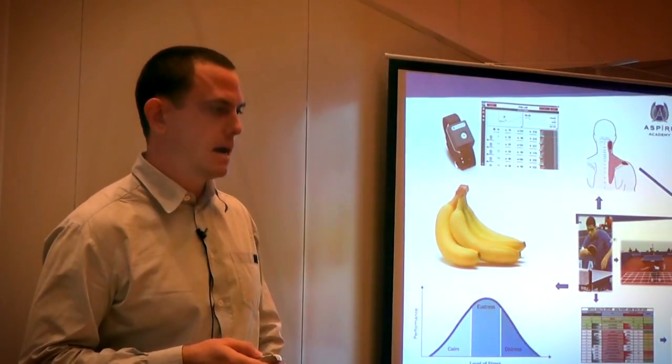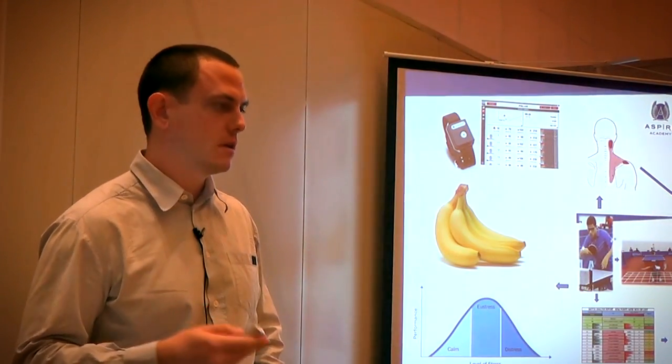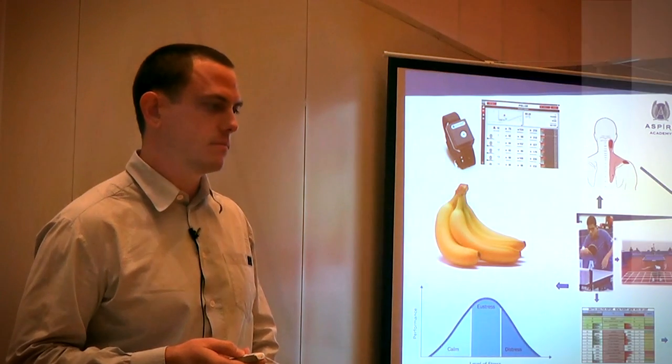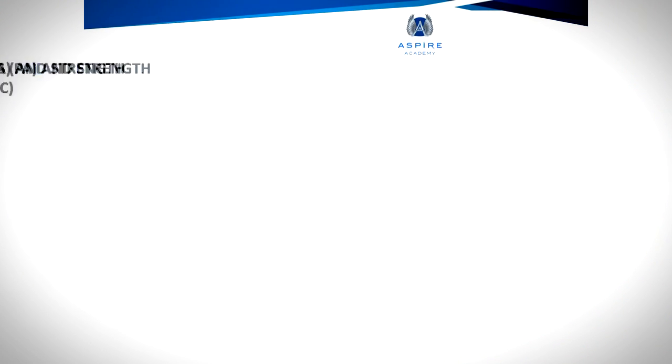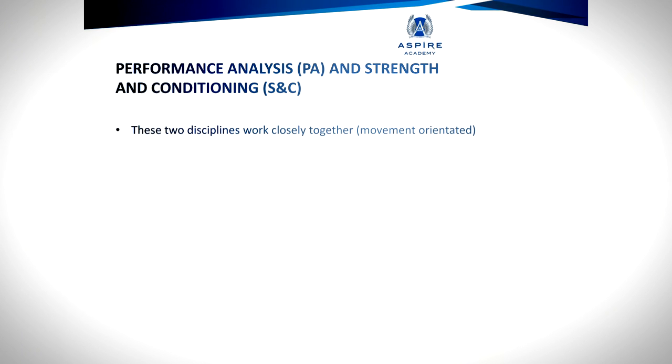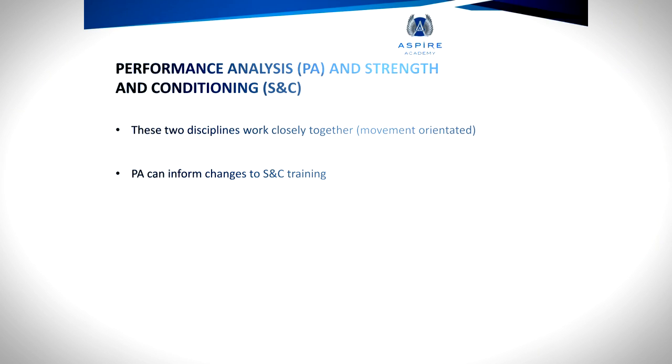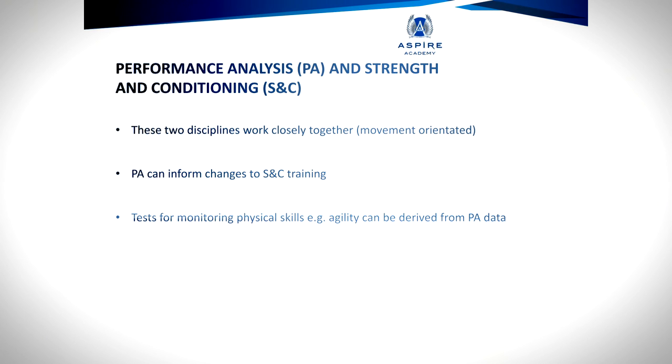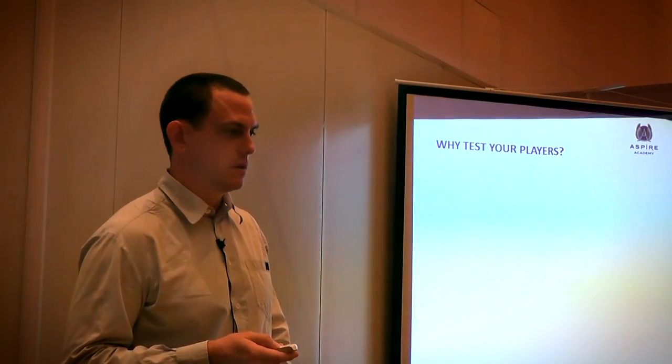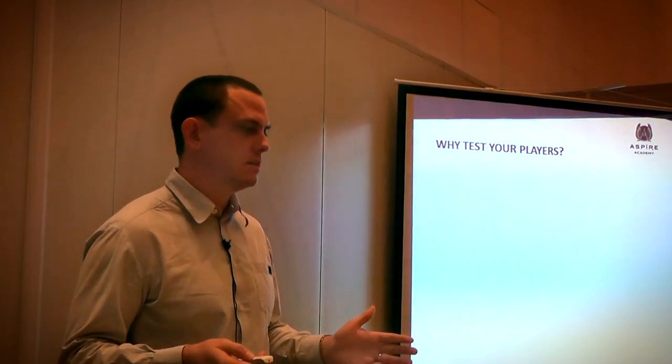So the first example: performance analysis and strength and conditioning. For me these two disciplines, they work very closely together. They're both movement oriented. Performance analysis can inform changes to a strength and conditioning program. This is key. We can do tests for monitoring the physical skills that are needed in table tennis such as agility, and we can derive these tests from performance analysis data.